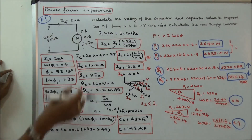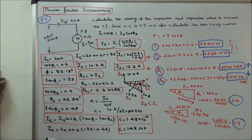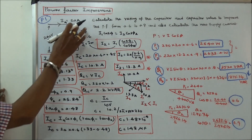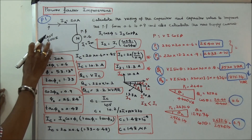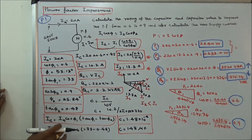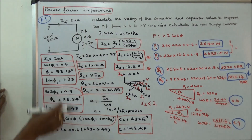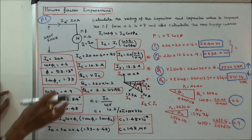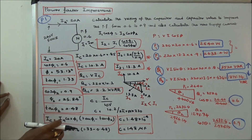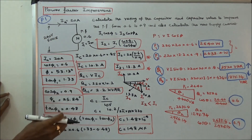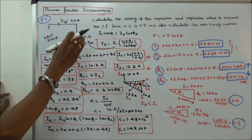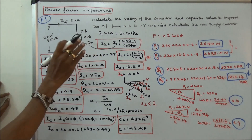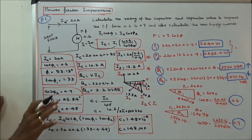This class we've got three problems. The first problem: a single phase induction motor draws 20 amps, supply voltage is 220V, frequency is 50 Hz, and power factor is 0.6. The question is: calculate the rating of the capacitor and capacitor value to improve the power factor from 0.6 to 0.9, and also calculate the new supply current.